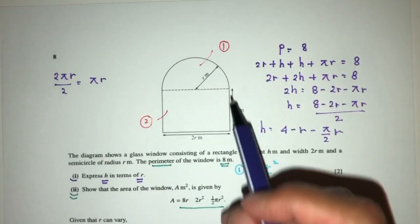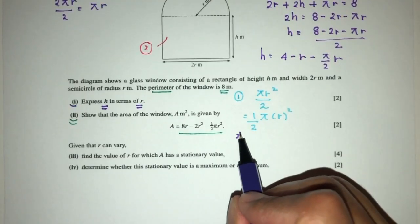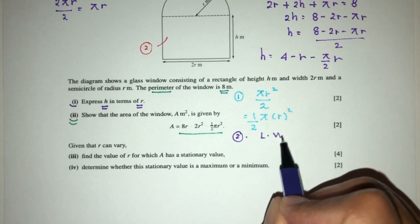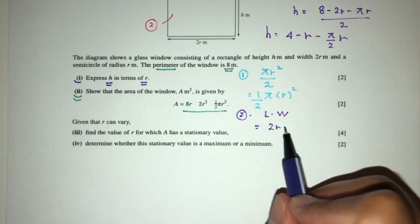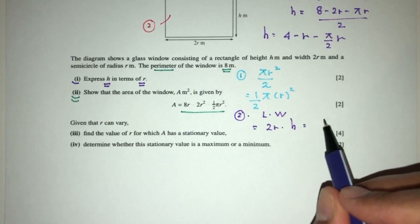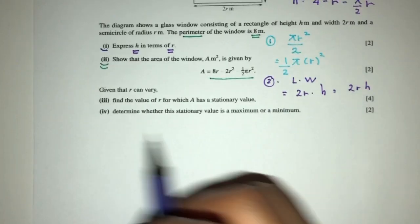Now, for part 2, area of this rectangle. So pretty easy. Rectangle will be length times width, which is equal to 2r times h. That will be 2rh. So, let's write this down, area.